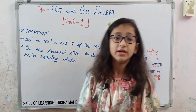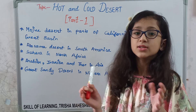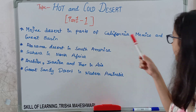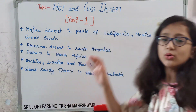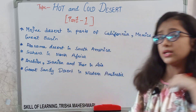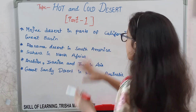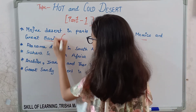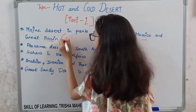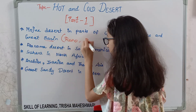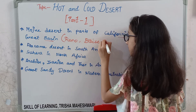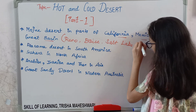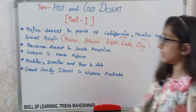Here are some examples of hot deserts. The Mojave Desert is in parts of California, Mexico, and the Great Basin. The Mojave Desert is not in just one city or country — it is in three locations: California, Mexico, and the Great Basin. The Great Basin also consists of three cities: Reno, Boyce, and Salt Lake City.